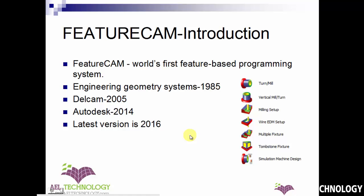Looking at the history, FeatureCam was first developed by a company called Engineering Geometry Systems, which was started in 1985. This company was acquired by Delcam in 2005 and became very well known during that period. Later, Autodesk acquired Delcam in 2014, and the latest version of this software is 2016.